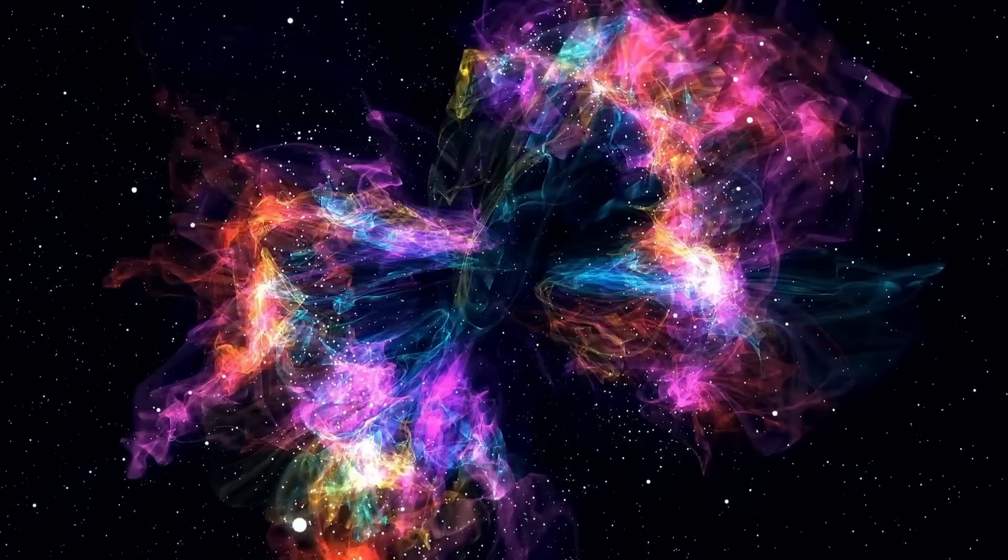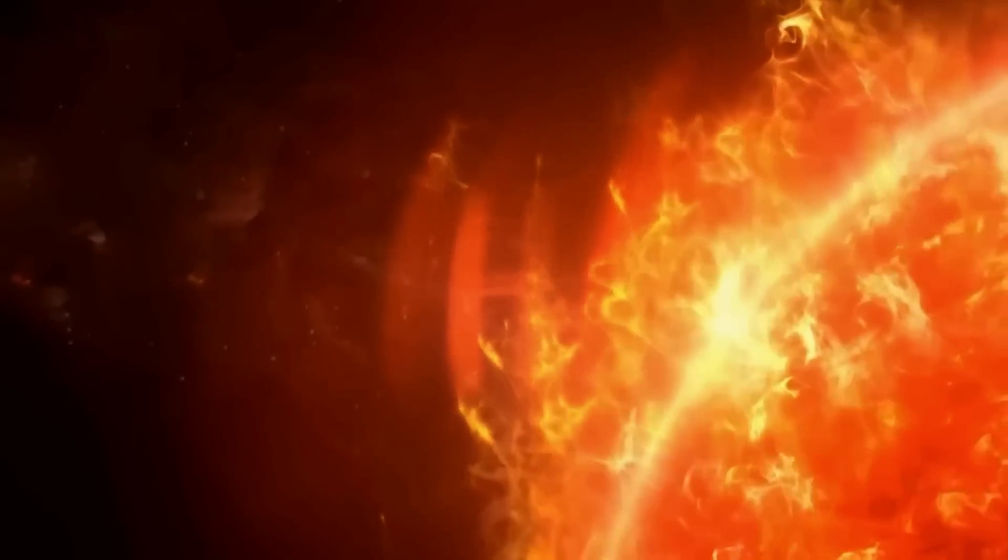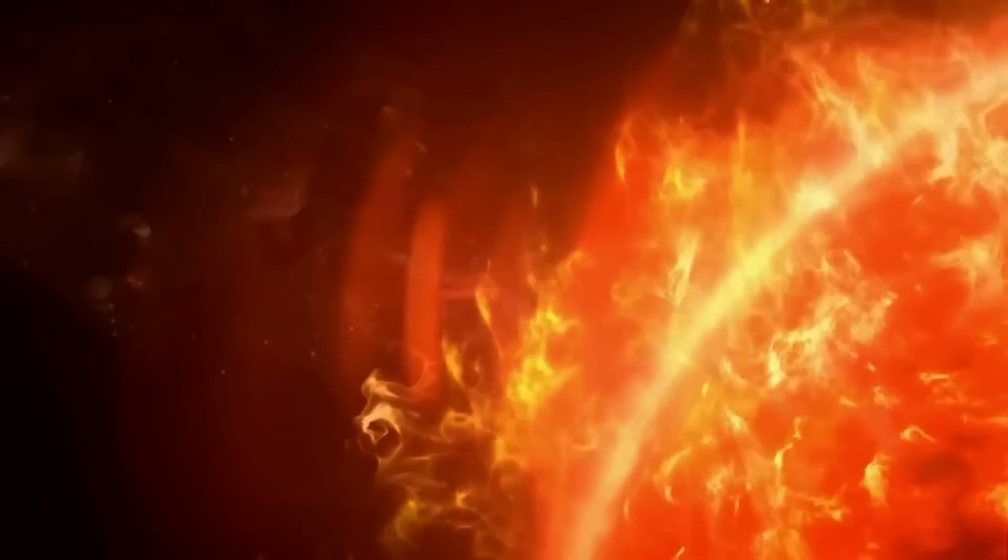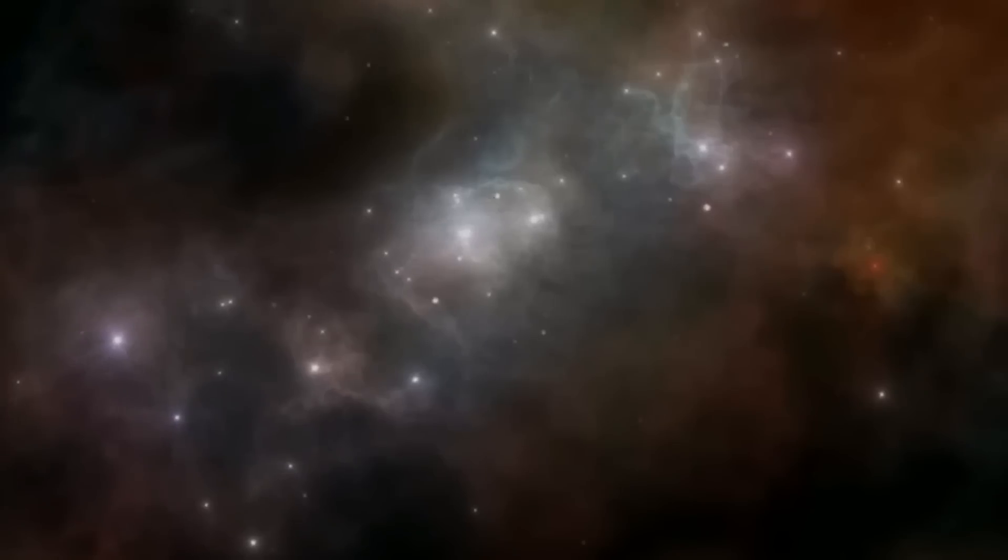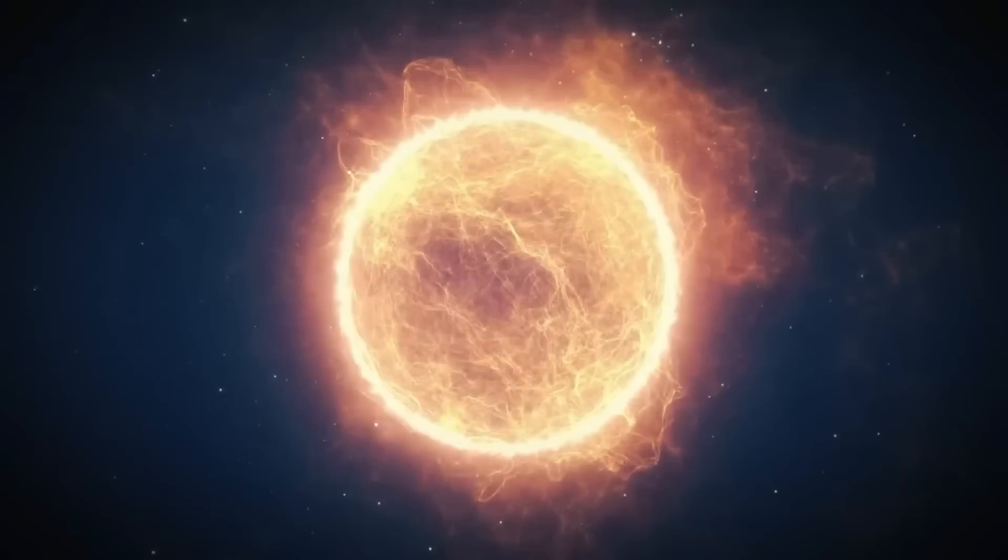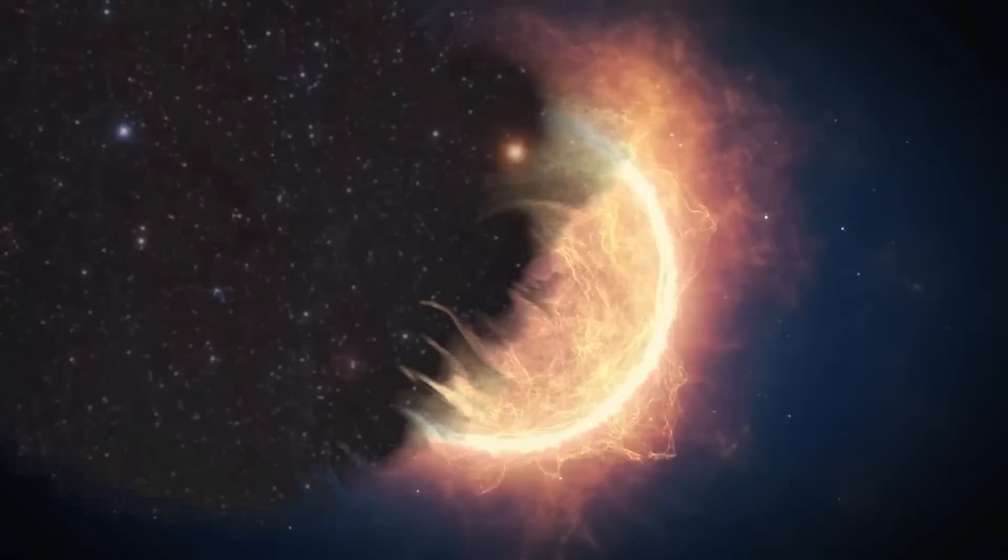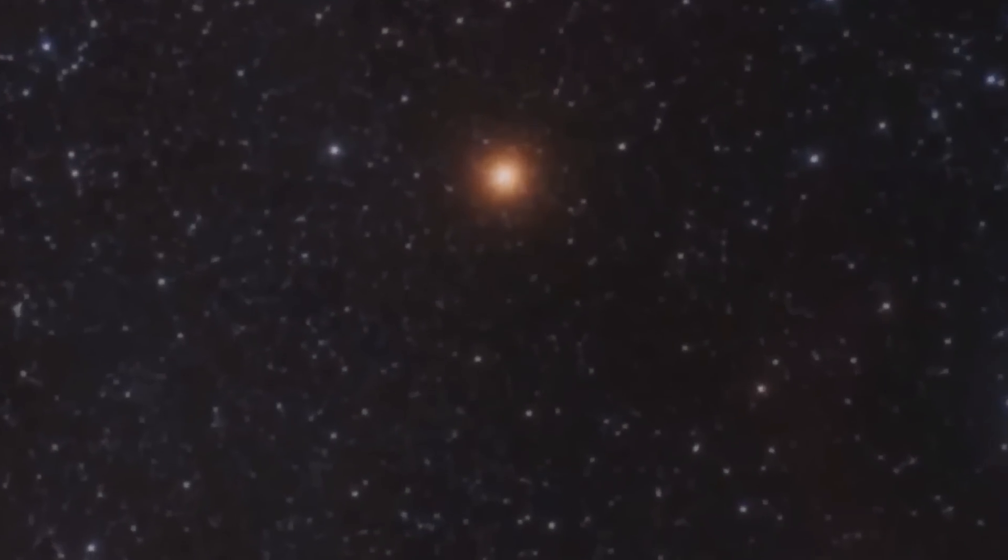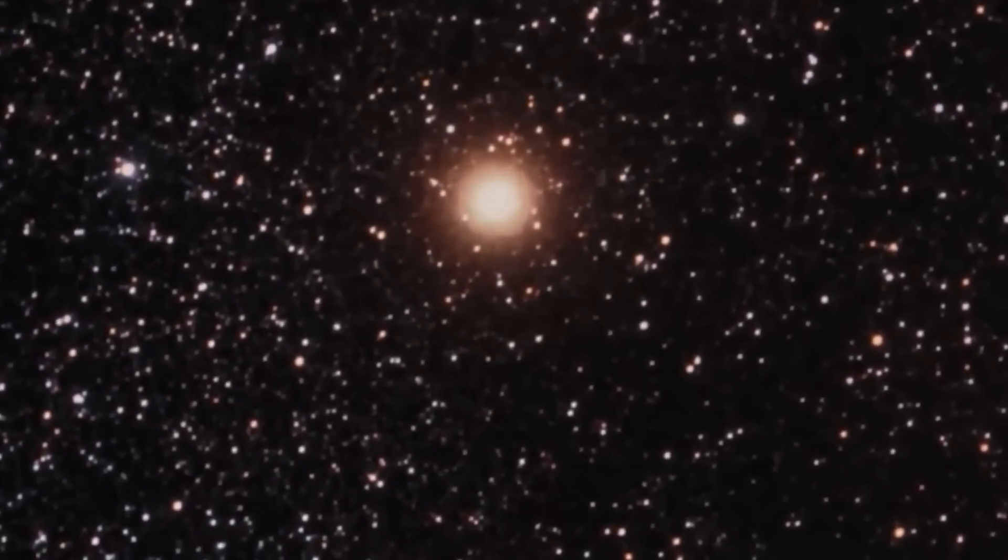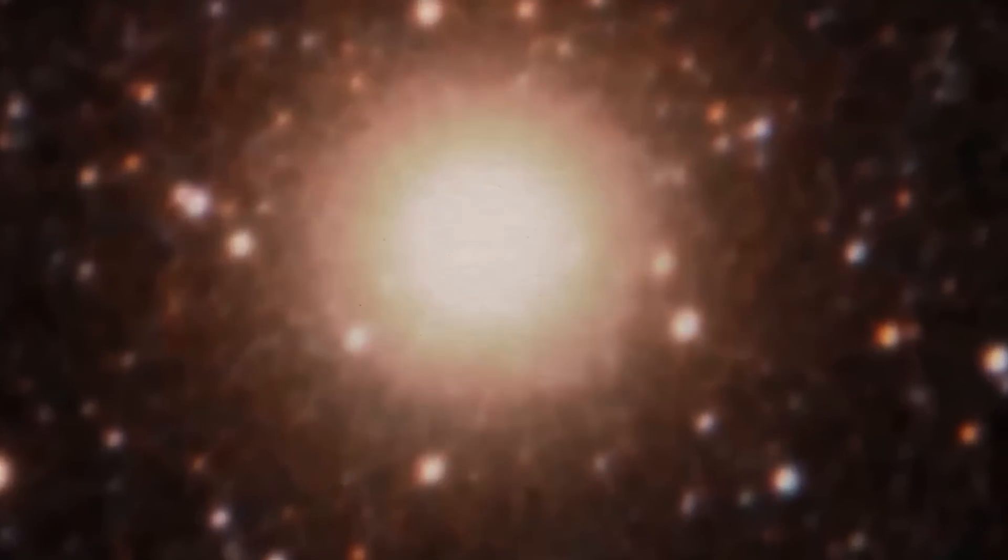Most stars in the universe get their power from nuclear fusion. When this process runs out, the star goes through a number of interesting changes before it finally dies. When a star is first formed, it is made up of hydrogen. Gravity pulls the hydrogen together in the star's core, where it fuses into helium. A lot of light and heat energy are usually given off during the fusion process. This energy moves to the star's surface and is sent into space as a photon.